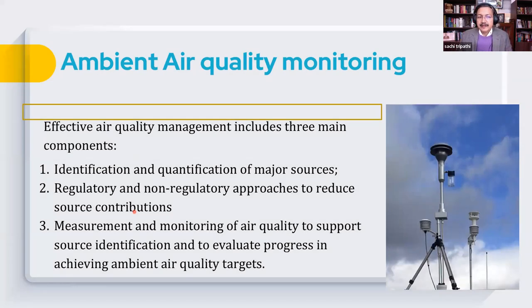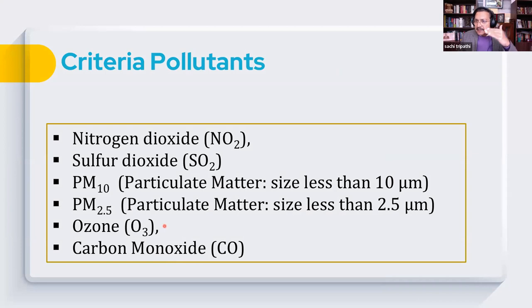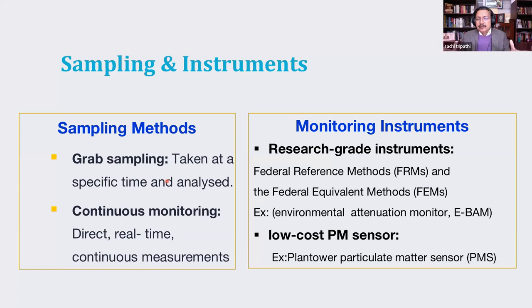We do monitoring to understand the level of pollution. It is also used for regulatory purposes — using PM levels and gas concentrations in the ambient to bring air quality within safe limits — and it provides information for overall air quality management plans. The criteria pollutants already discussed during NCAP include mainly four gases and two kinds of particulate matter: PM2.5 and PM10. There are two different kinds of sampling in national ambient monitoring in India.